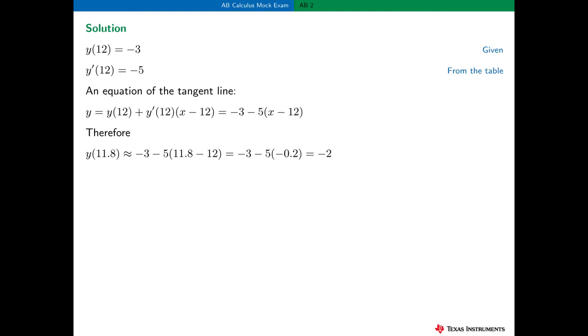So finally, let's put all this information together to solve this problem. We're given that y(12) = -3, and from the table we have that y'(12) = -5. Using the concepts just presented, an equation of the tangent line is -3 - 5(x - 12). So to find the approximation, let x = 11.8 in this equation. And after a little simplification, we're left with y(11.8) ≈ -2.